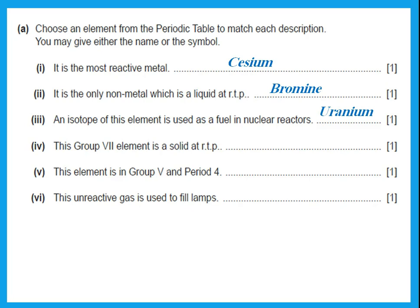This is group 7, or this group 7 element is a solid. So which one in group 7 is a solid? You can either say iodine or you could say astatine. So in group 7, we have iodine and astatine are solid. This element is in group 5, period 4. So you need to look. Group 5, period 4, you will find that it's arsenic. This unreactive gas is used to fill lamps. We said which unreactive gas is used to fill lamps? Argon.